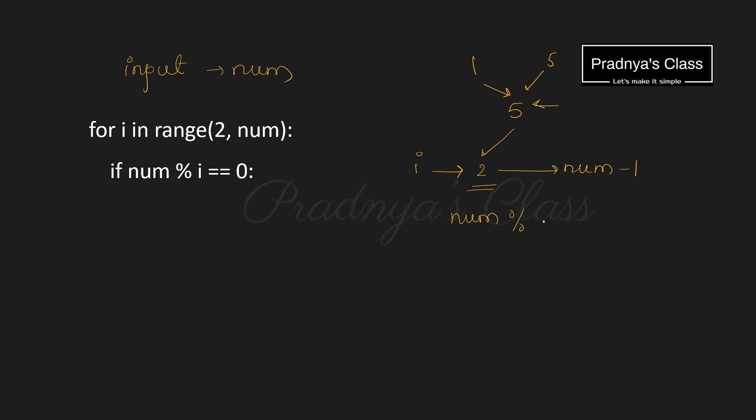We will take the modulus of number by i. If it is equal to 0 means it is divisible. If it is divisible means what? It is not a prime number. If it is not a prime number, it means it is a composite number.